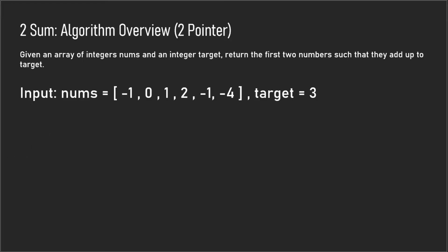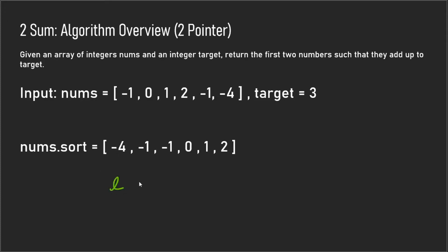In this algorithm, you would first sort the nums array. After sorting, we have a left pointer and a right pointer — the left pointer pointing to the first element in the array and the right pointer pointing to the last element. Now if we add the left and right pointer together we get negative two.